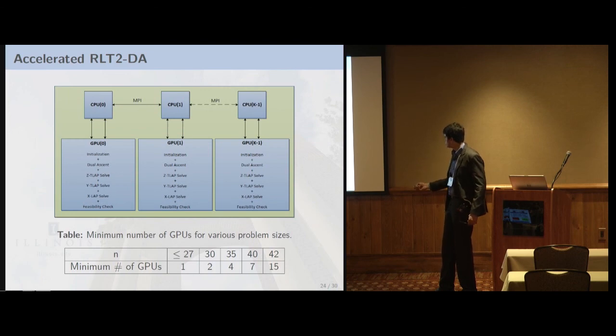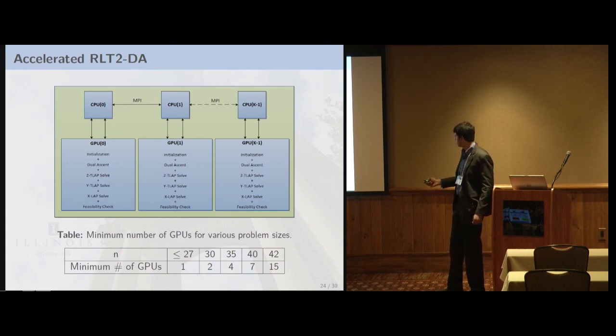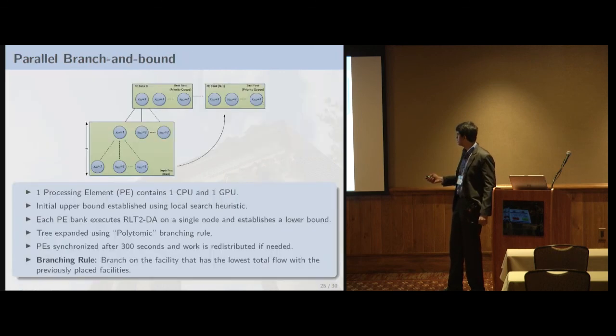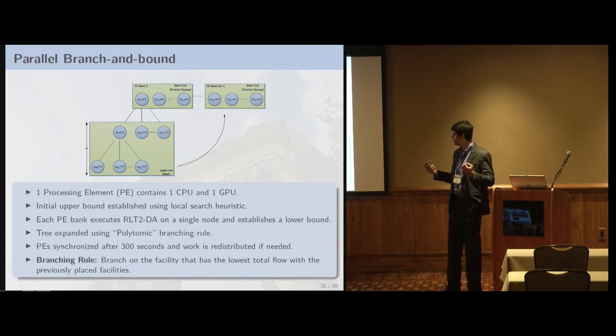So I'm going to quickly skip over this slide. Basically, we split the linear assignment problems for a single node across multiple GPUs because it's a memory bound problem. And these are the number of GPUs that you need to tackle the problem that's specified over here. So for 42 facility problem, you need to have 15 GPUs which are present on blue waters. Tile linear assignment, so what we did was, since there are a lot of assignment problems, you can just merge them together and solve a super LAP and it actually improves the utilization of the GPU. So this helps solve the problem faster rather than solving individual LAP in a single kernel. And the parallel branch and bound, again, we had this load balancing scheme, where after every 300 seconds, all the processor banks will communicate with each other. If some of the processor banks are running idle, then the work will be redistributed. And this way, we make sure that all the processors have a balanced utilization.